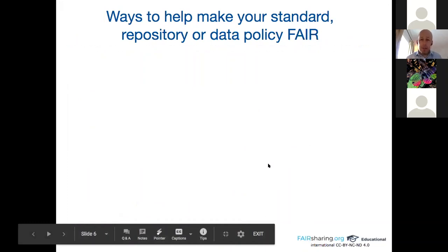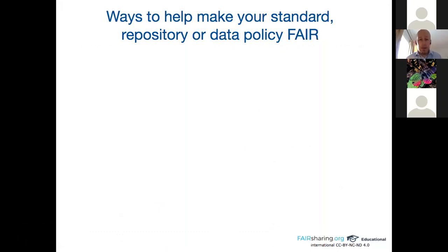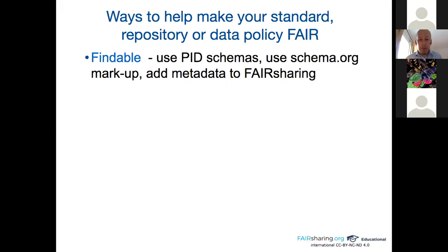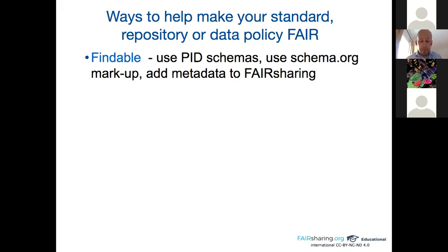Ways to help make your standard, repository, or data policy FAIR: Findable — use PIDs, and if you have a website use schema.org markup, which was created by Google, Microsoft, and Yahoo to mark up web pages with tags. When you search for a cooking recipe and get a list with snippets and photos, those are provided by schema.org markup — providing context for your resource. You can add metadata for your resource into FAIRsharing. Accessible — give it a license. Interoperable — use community standards. Reusable — be very clear about what people can do with it.